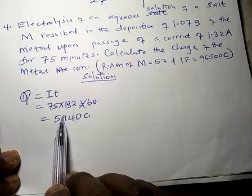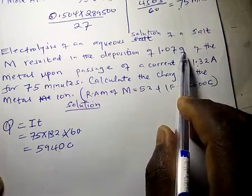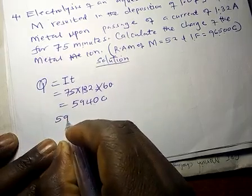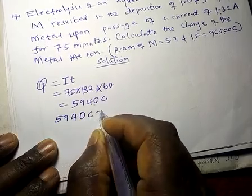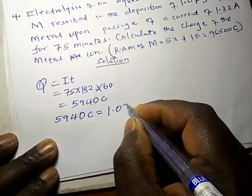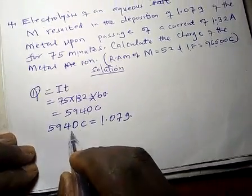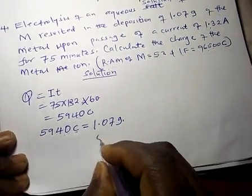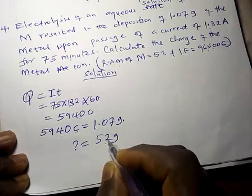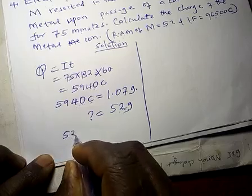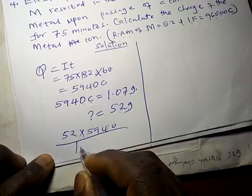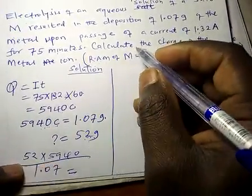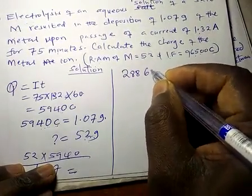This quantity of electricity, 5,940 coulombs, was able to produce 1.07 grams. We ask: what quantity of electricity would correspond to 1 mole, which is 52 grams (the RAM)? That is 52 times 5,940 divided by 1.07, and the answer is 288,673 coulombs.